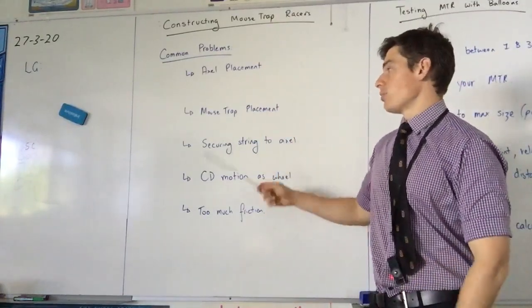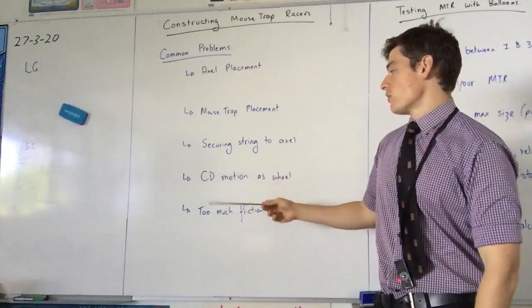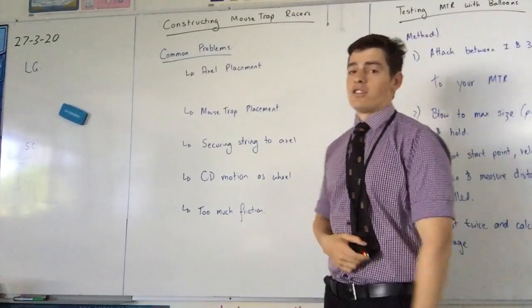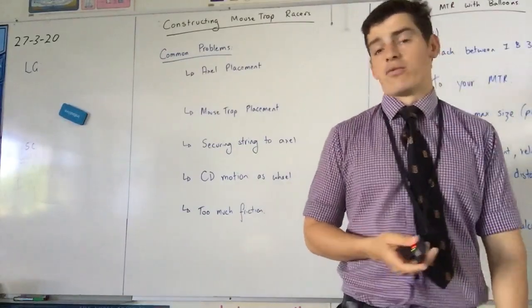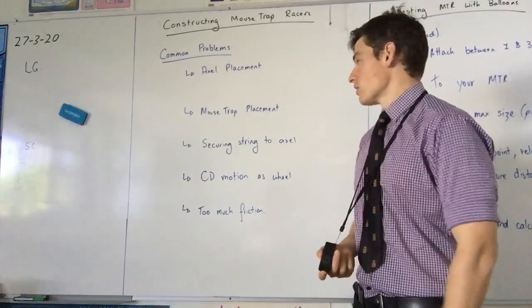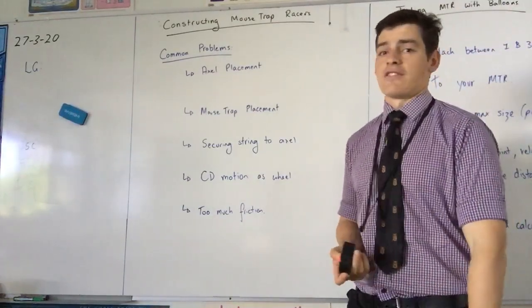So just be aware, axle placement, mousetrap placement, securing the string, CD motion, so wobbling of the CD as you go, if there's too much friction, hopefully you can get through this in one go and you don't have to redo anything because you've measured twice, cut once. That's a good philosophy to have in this. So we'll talk about how we're going to assess that from there.